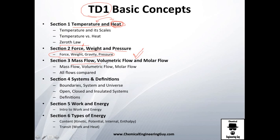Then we continue with section three, which covers all the types of flows we will be using: mass flow, volumetric flow, and molar flow, and I'm going to compare them. After that, section four covers systems and definitions — what's a system, what's a boundary, the surroundings, the universe, and so on, including open, closed, and isolated systems, plus some other definitions.